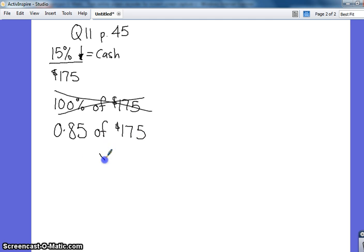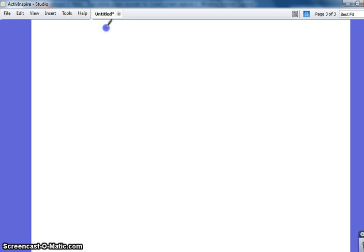Yeah. So, of means to times .85 times $175. And so, what does that give you? $148.75. This total is less than the original price, which it should, because you're not paying 100% of that.